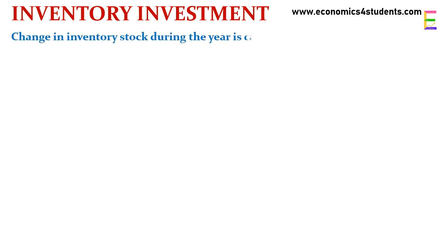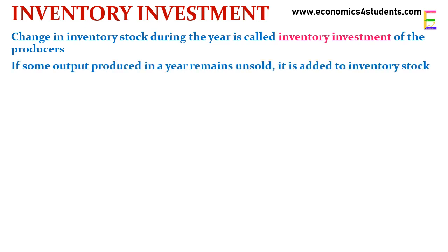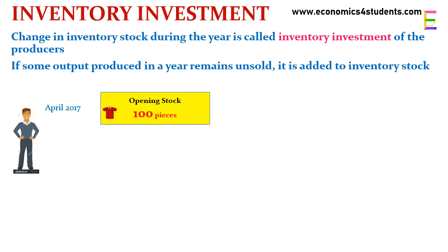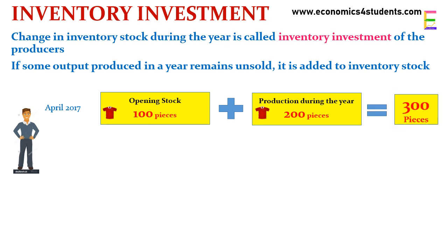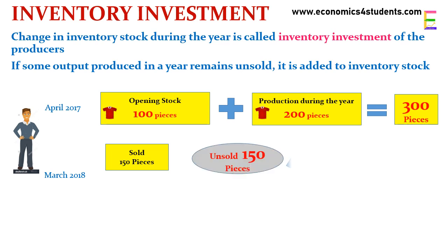Another type of investment is inventory investment. Change in inventory stock during a year is called inventory investment of the producer. If some output produced in a year remains unsold, it is added to inventory stock. Suppose a producer is starting his business in April 2017 with the previous year's unsold stock of clothes, which is 100 pieces — so the opening stock is 100 pieces of cloth. During the whole year he procured 200 more pieces of cloth, so total clothes available for sale are 100 plus 200, equal to 300 pieces.